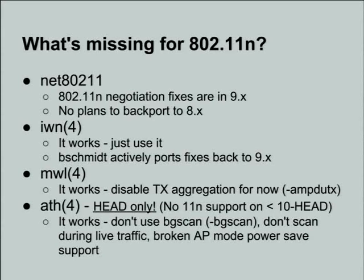The Marvel driver works again but there's some weird situation with setting up TX aggregation. If you disable that in head, everything works fine. I actually get 60-70 megabits of received throughput on the supported Marvel NICs with 11n. The Atheros stuff works extremely well in head only, and I can get up to 150 megabits unidirectional TCP and 280 megabits unidirectional UDP using the relevant Atheros NIC.